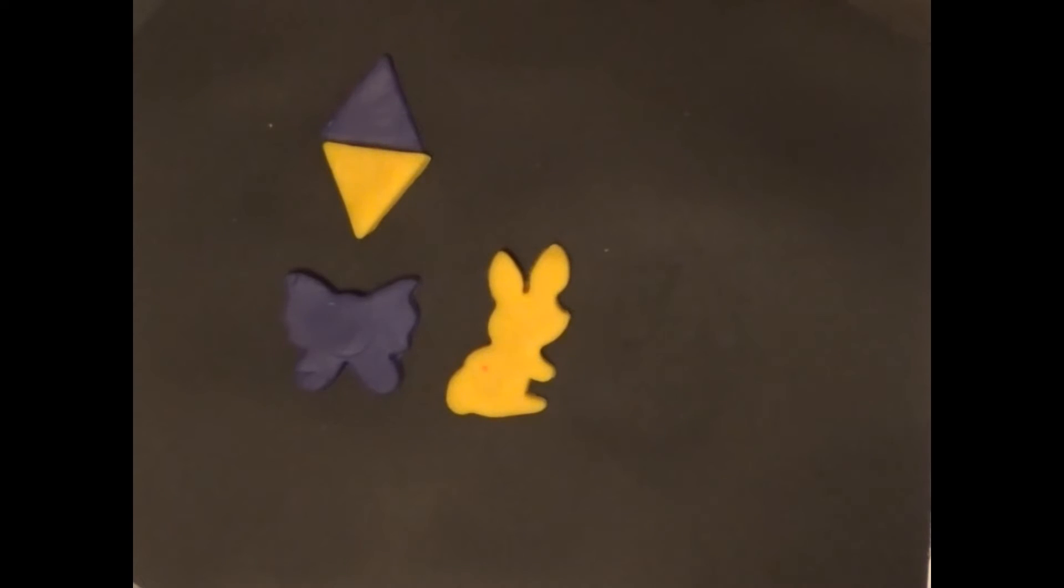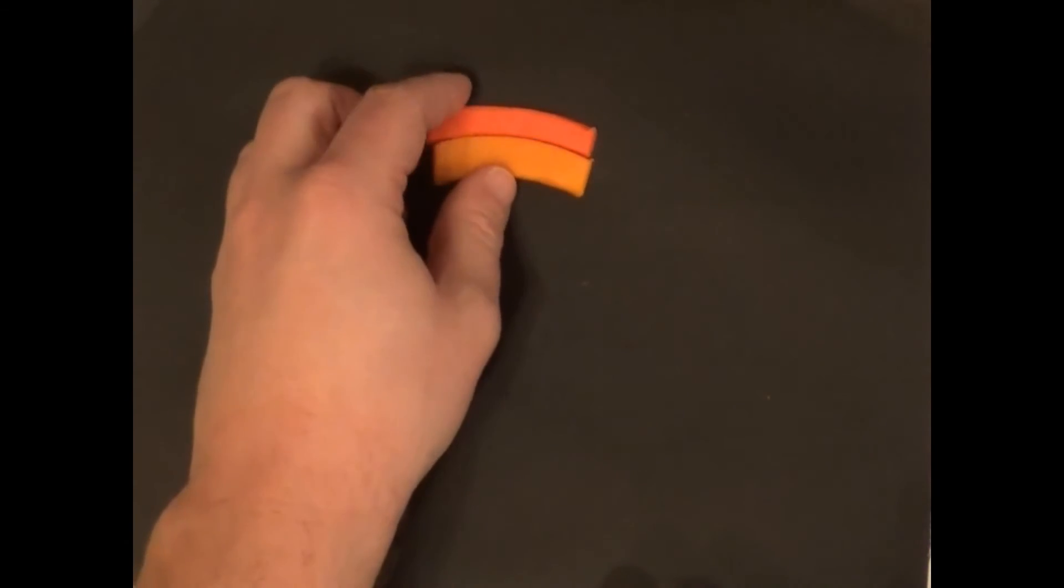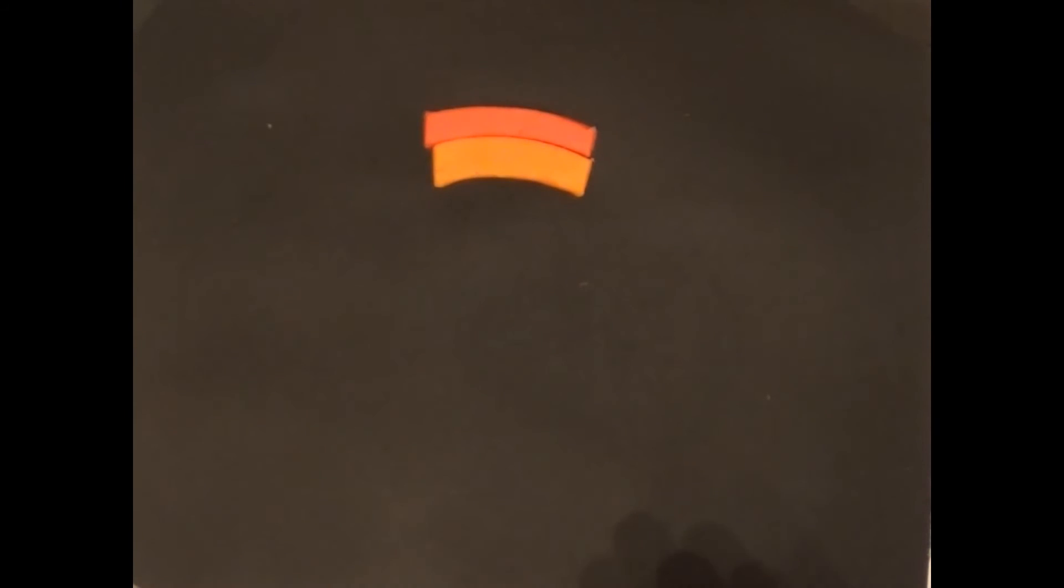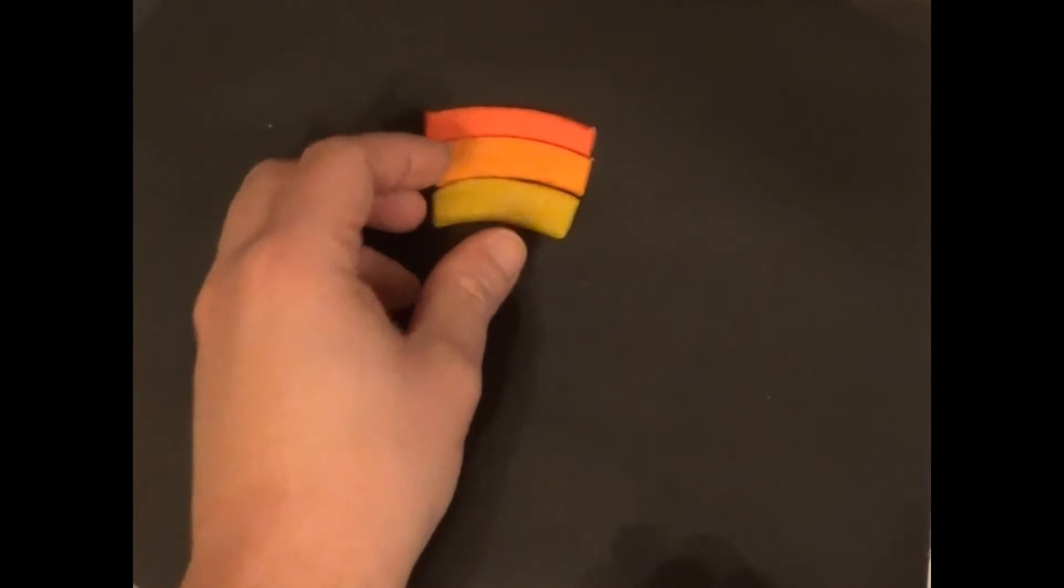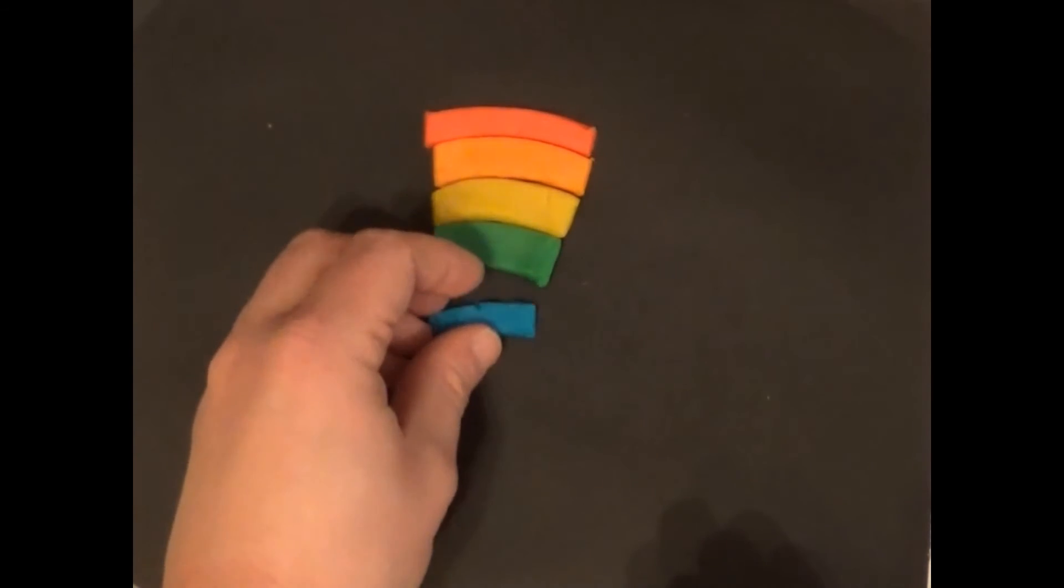Now, after a rainy day, you may have noticed in nature something really colorful in the sky. It's made up of different strands. The first strand is red, the next strand is orange, the strand after that is yellow.